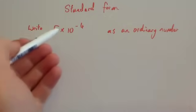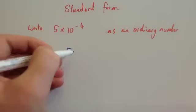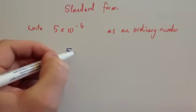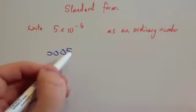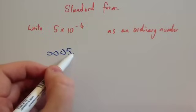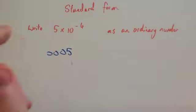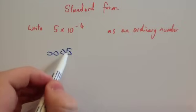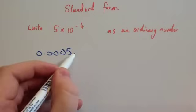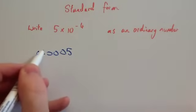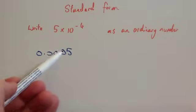This time we've been asked to write 5 times 10 to the minus 4 as an ordinary number. We have 5, so the decimal point would be here: 5.0. We need to move it four places to the left. I sometimes just put a couple of zeros in front to help count where it goes. Moving 1, 2, 3, 4 places to the left, 5 times 10 to the minus 4 is the same as 0.0005.